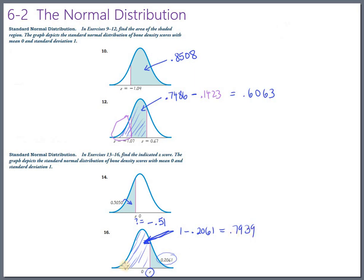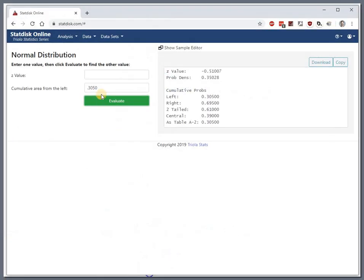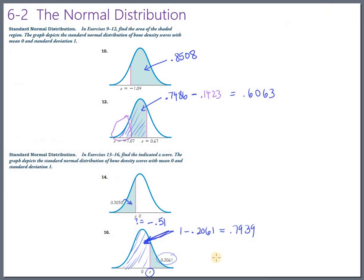And that's 0.7939. So we can put into StatDisk, 0.7939, the area to the left, 0.7939. Evaluate that. And get a z-value of about 0.82. So this one down here is about 0.82.